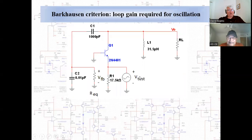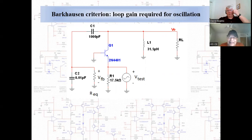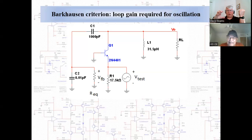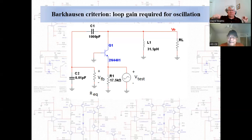The usual way to analyze oscillators to see if they're going to work is to apply the so-called Barkhausen criterion. That simply is: if you break the feedback loop and inject a signal into one side of the broken loop and look at the response at the other side — if the signal coming back is in phase with and at least as large as the original test signal — then if you take the test source out and close the loop, it will be a self-sustaining oscillator. There's enough coming back to keep feeding it.